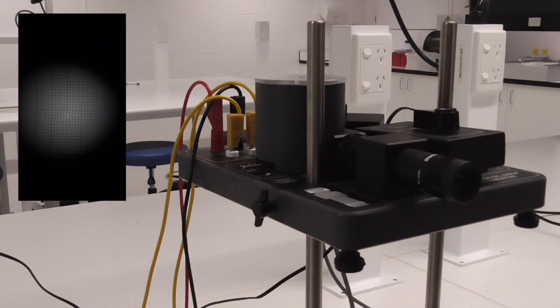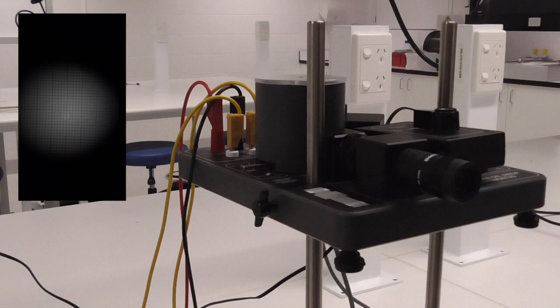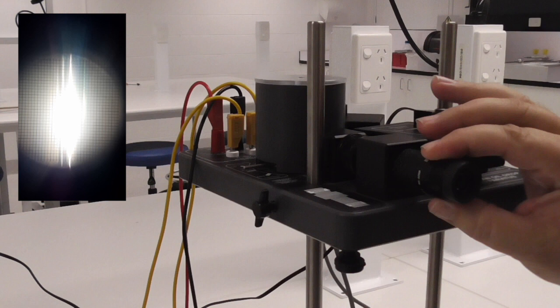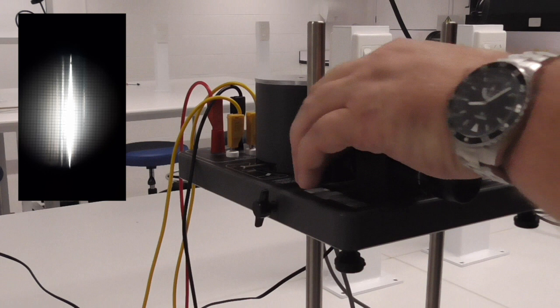We can then bring the reticle into focus by turning the reticle focusing ring on the viewing scope. We can view the focusing wire through the viewing scope and bring the wire into sharp focus by turning the droplet focusing ring.